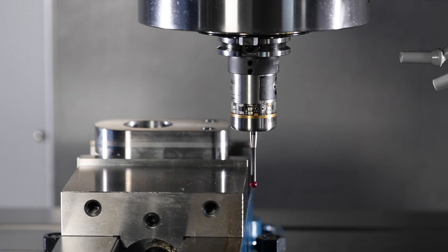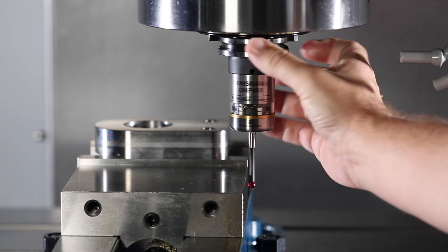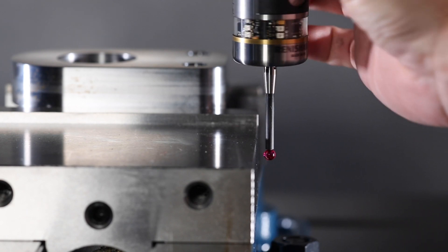One more step before we get to actual calibration. Before calibrating, we have to make sure the stylus ball on our probe is concentric to our spindle within 5 tenths of an inch. This is called trimming in the head.